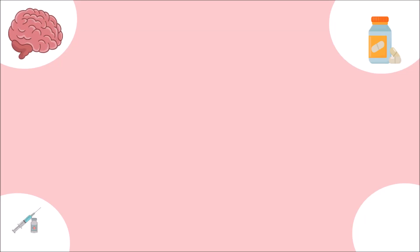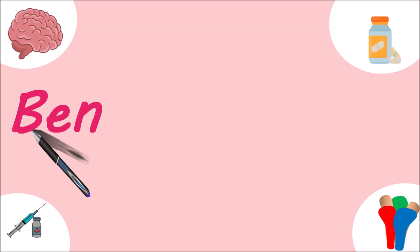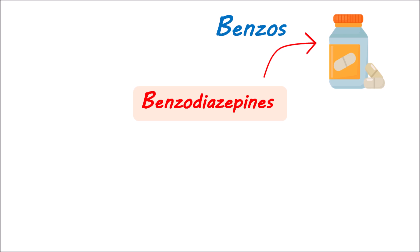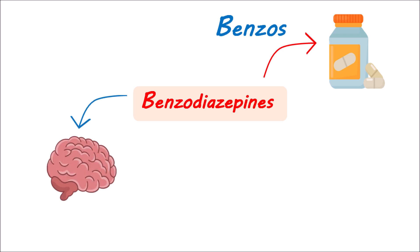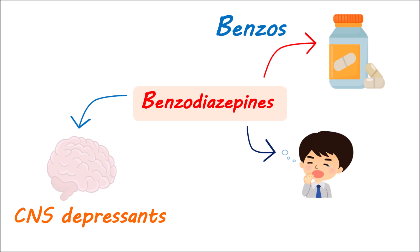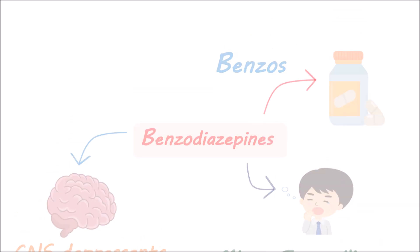Hello everyone! Here in this video, let's discuss the pharmacology of benzodiazepines. Benzodiazepines are well-known drugs, commonly known as benzos. These drugs act on the CNS, producing an inhibitory effect, hence they are considered CNS depressants. As they produce sedation and reduce agitation, they are also called minor tranquilizers. So what are the actions of these benzodiazepines?